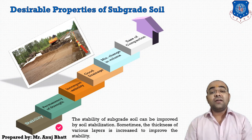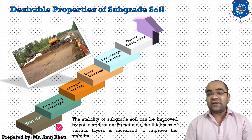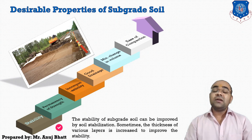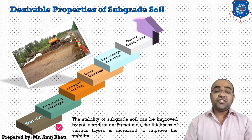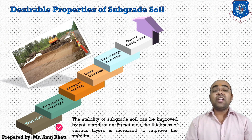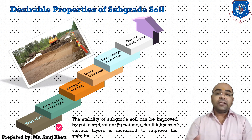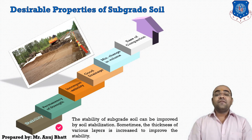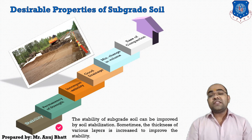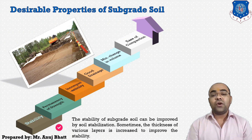Those factors are: vehicle and traffic factors, which also affect the stability of subgrade soil; next is moisture of soil; next is climatic conditions — climate also affects the stability of soil; then the particular type of soil; and stress distribution. So these five factors affect the stability of the soil.